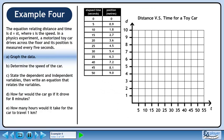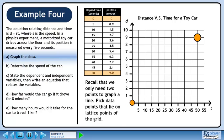The graph we'll draw can be labeled distance versus time for a toy car. The x-axis is time and the y-axis is distance. Recall that we only need two points to graph a line. Pick data points that lie on the lattice points of the grid. Now draw a line through the points.